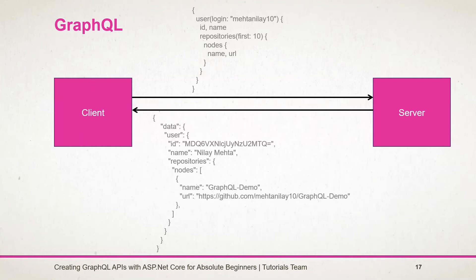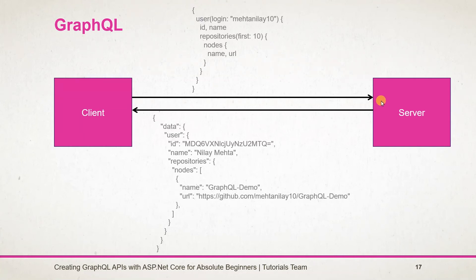In GraphQL, we can handle this in a single request. Here is an example using GitHub's GraphQL API. The client specifies exactly which fields it expects: obtain user detail for a given login name, include just the ID and name, as well as obtain the repository detail returning only the name and URL. GraphQL has only one endpoint for all requests. The server processes the request and returns data as per the client's specification, so the client only gets the fields it requires, saving network data.